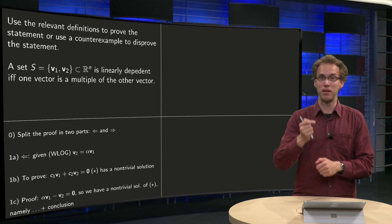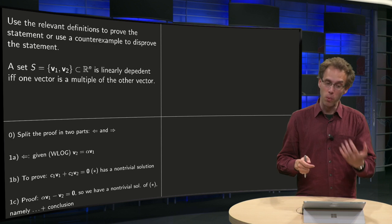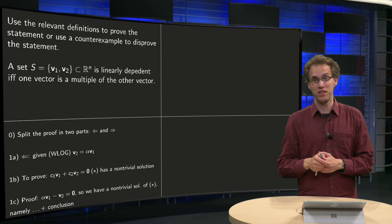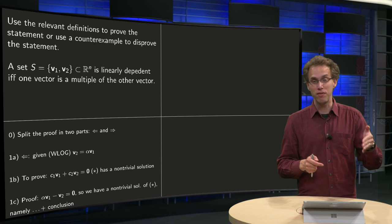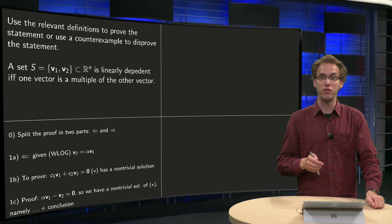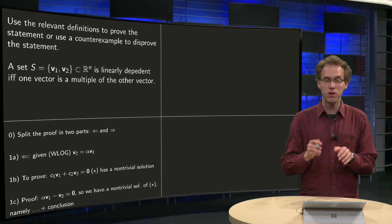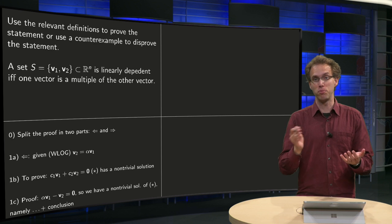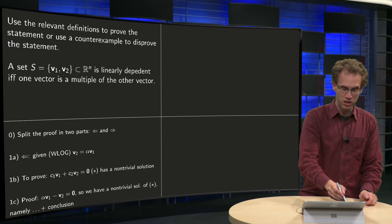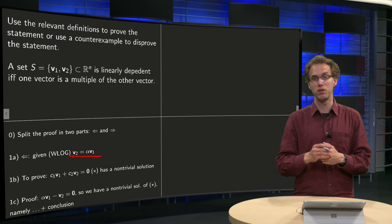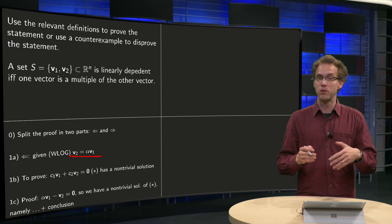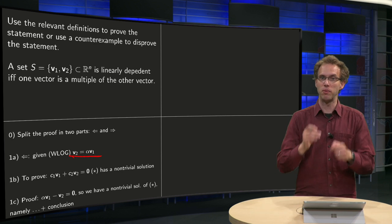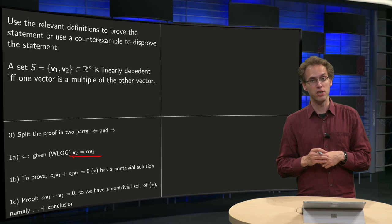That implication and that implication. One says: if one of the vectors is a multiple of the other, then the set S is dependent. The other says: if S is dependent, then one of the two is a multiple of the other. So that's step zero — split into two parts. We'll do this one first. Given is that one of the vectors is a multiple of the other, and without loss of generality we can assume it is the second one that is a multiple of the first. If it would be the other way around, you just switch them in your starting set.